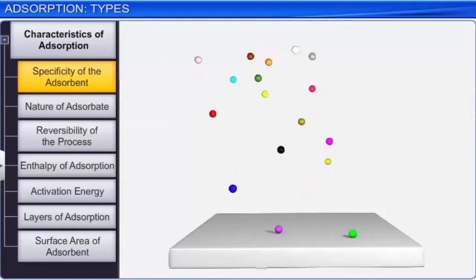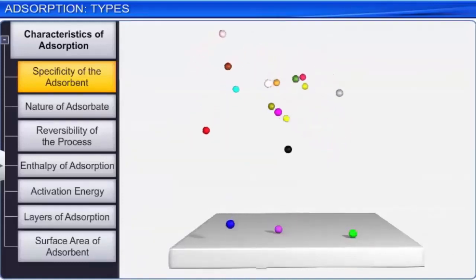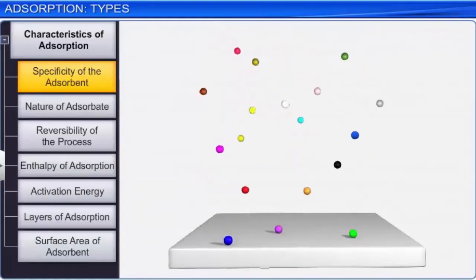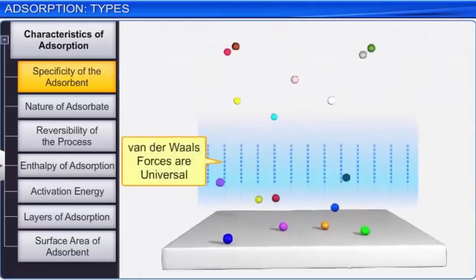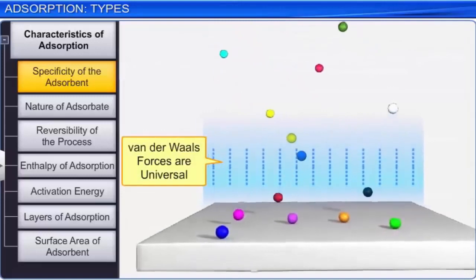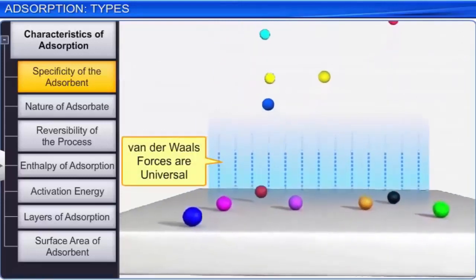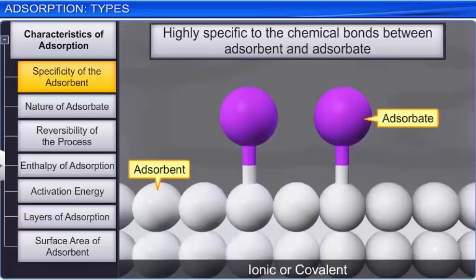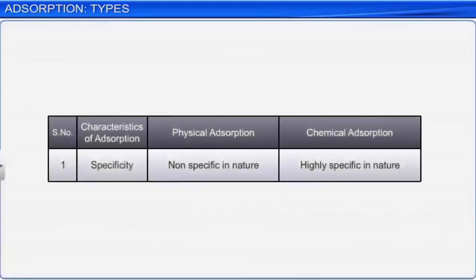In physical adsorption, the surface of the solid adsorbent has no specific preference for any type of gas molecules, because the Van der Waals forces that act are universal. However, chemical adsorption is highly specific and will occur only when an ionic or covalent bonding is possible between the adsorbent and the adsorbate. Therefore, while physical adsorption is not specific in nature, chemical adsorption is highly specific.